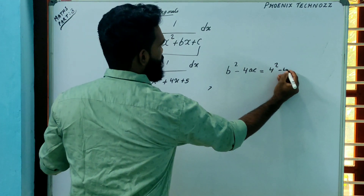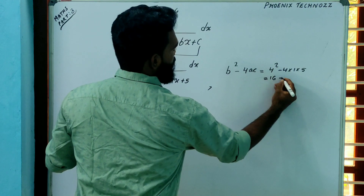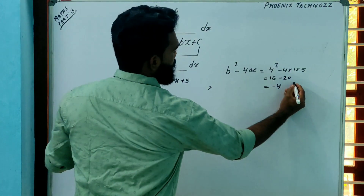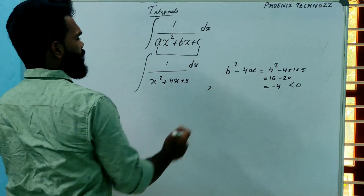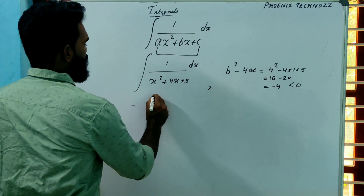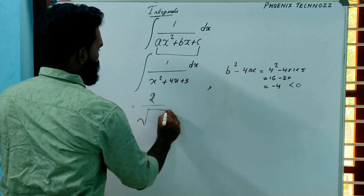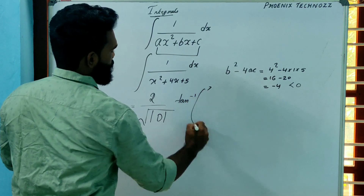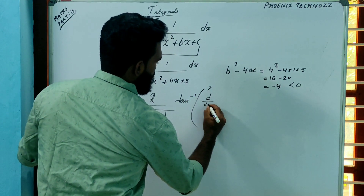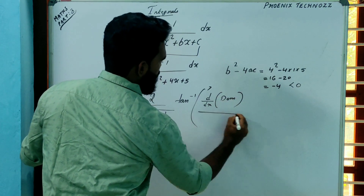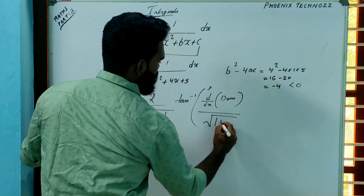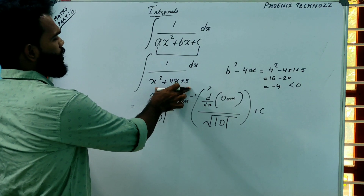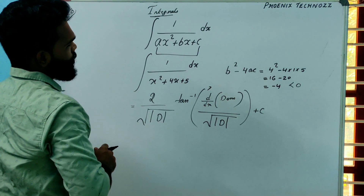The discriminant is b²−4ac = 4²−4(1)(5) = 16−20 = −4. So the discriminant is negative. If b²−4ac is negative, then the shortcut formula is: 2 divided by the square root of the modulus of the discriminant, into tan inverse of the derivative of the denominator, divided by the square root of the modulus of the discriminant, plus C.